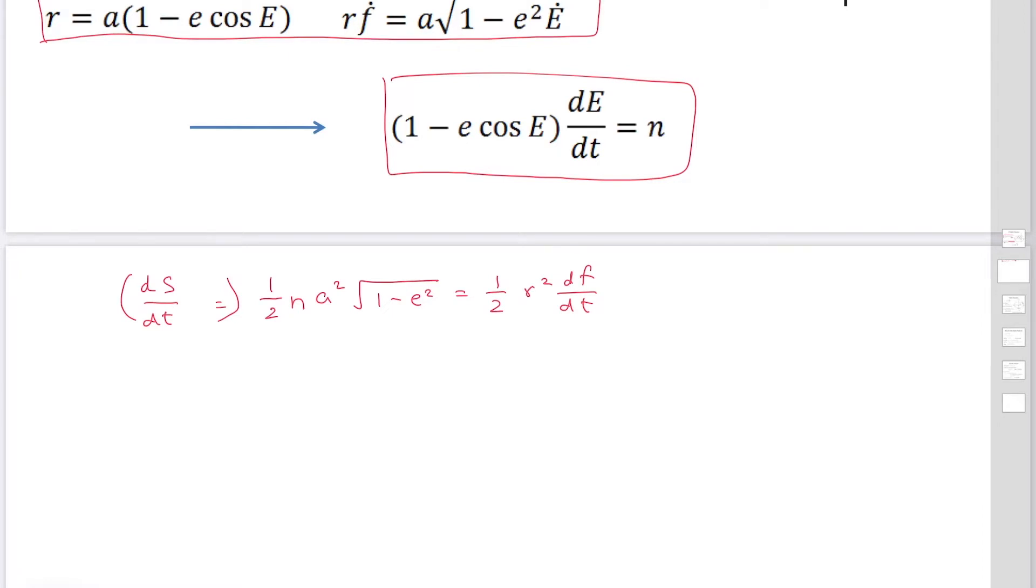Then 1 over 2 appears in both sides. For R squared Df Dt, you can multiply R times R F dot. You can substitute this expression here. Then it becomes A squared, 1 minus E cosine E.